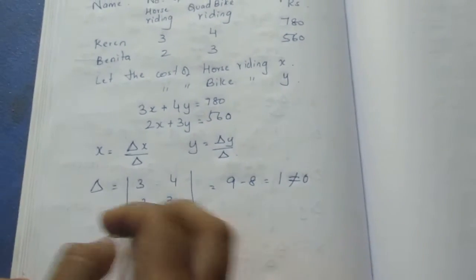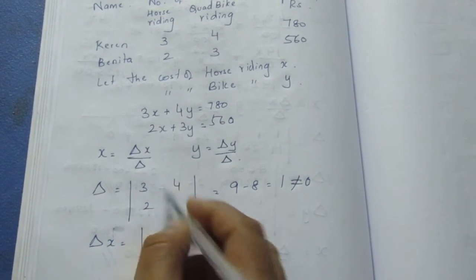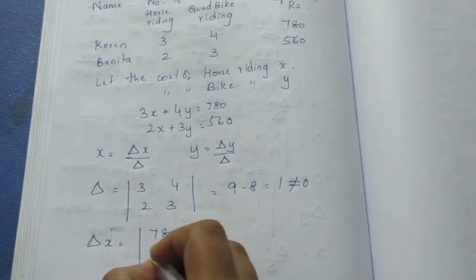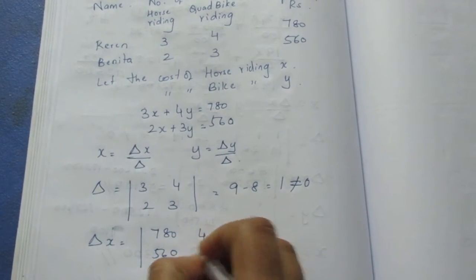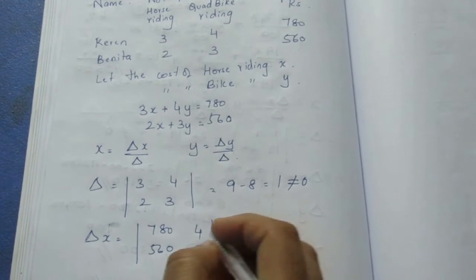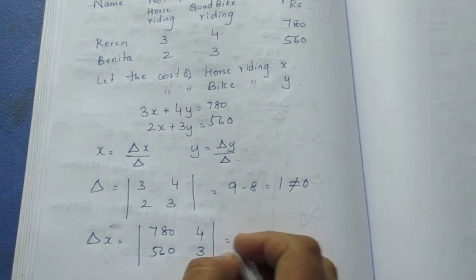That means determinant x exists. Determinant x means we substitute the values. For determinant x: 780, 4 in the first row; 560, 3 in the second row. If we multiply, 3 times 780 is 2340, minus 4 times 560 is 2240.